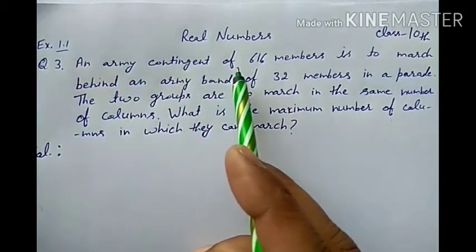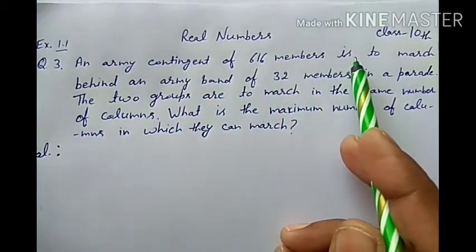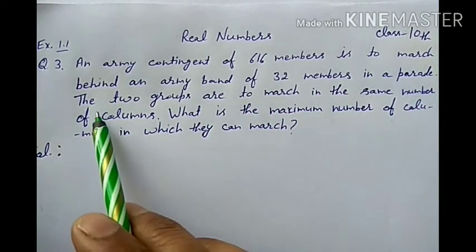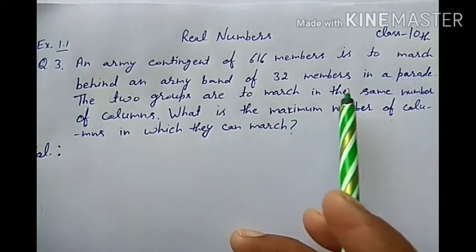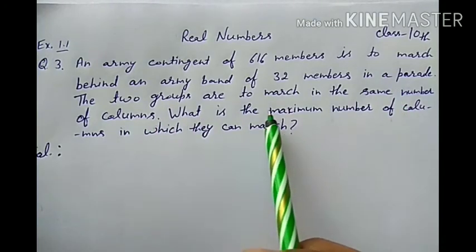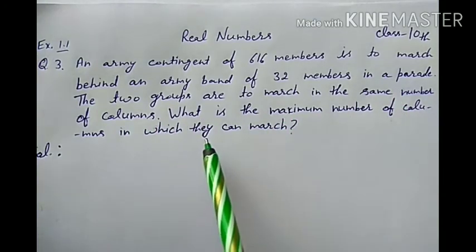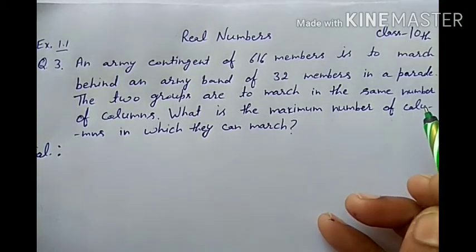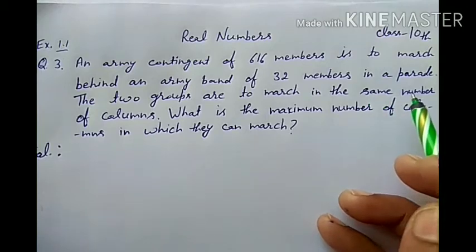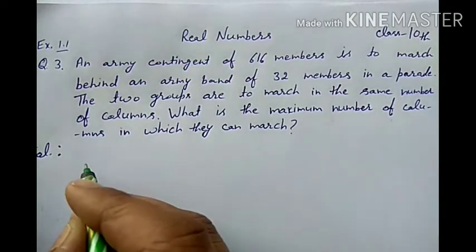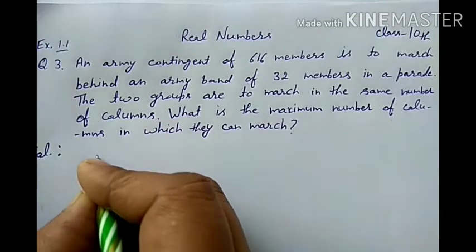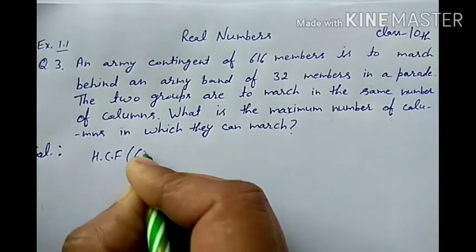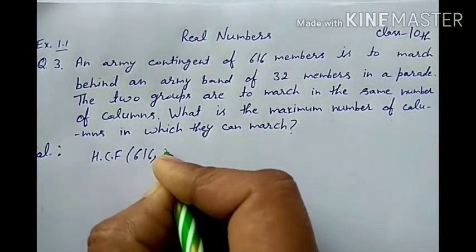An army contingent of 616 members is to march behind an army band of 32 members in a parade. The two groups are to march in the same number of columns. What is the maximum number of columns in which they can march? So here we need the maximum number of columns and same number of columns.